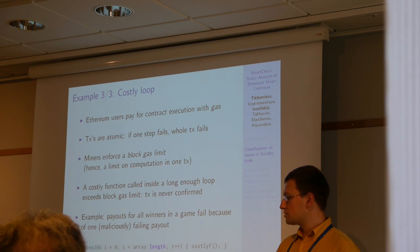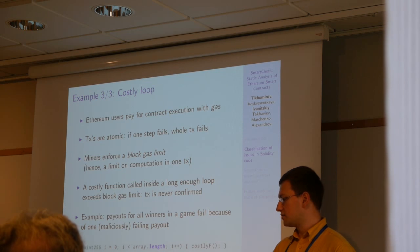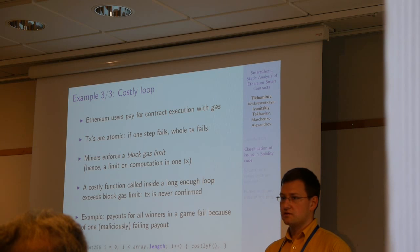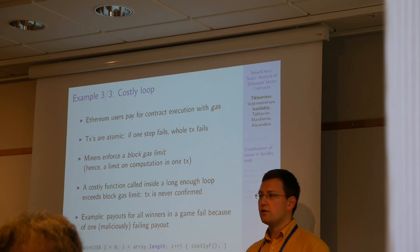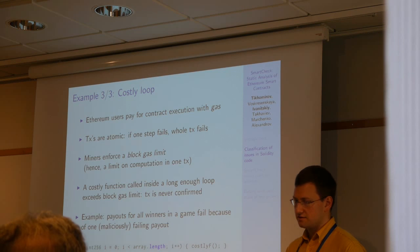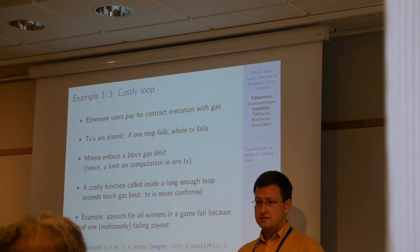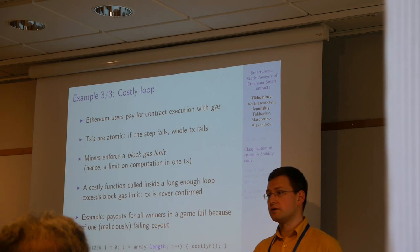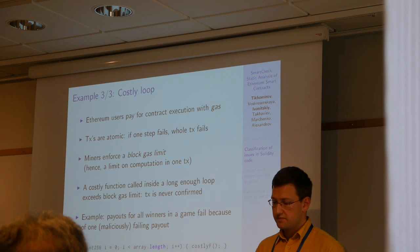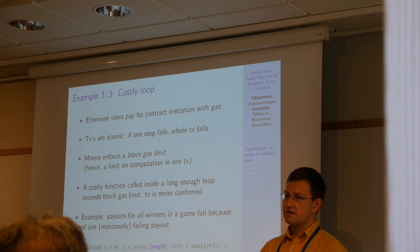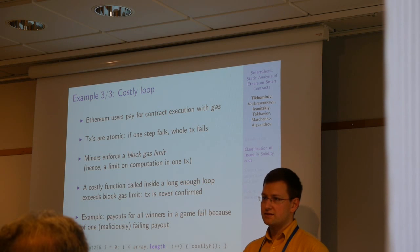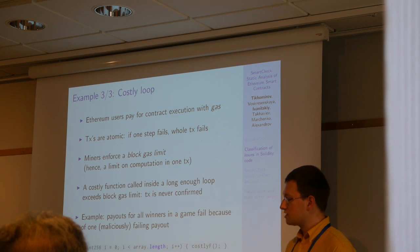The third example is what we call costly loop. Imagine a contract with a number of users. Users must pay in terms of gas for computations, and transactions are atomic — if one step fails during execution, all effects of the transaction are reverted. Miners enforce a block gas limit, meaning the total amount of computation inside one transaction is limited. If we have a loop through an array and the length of the array is big enough or unknown in advance, or if the function executed inside the loop is costly, the total gas required can exceed the block gas limit, meaning the transaction can never be confirmed.